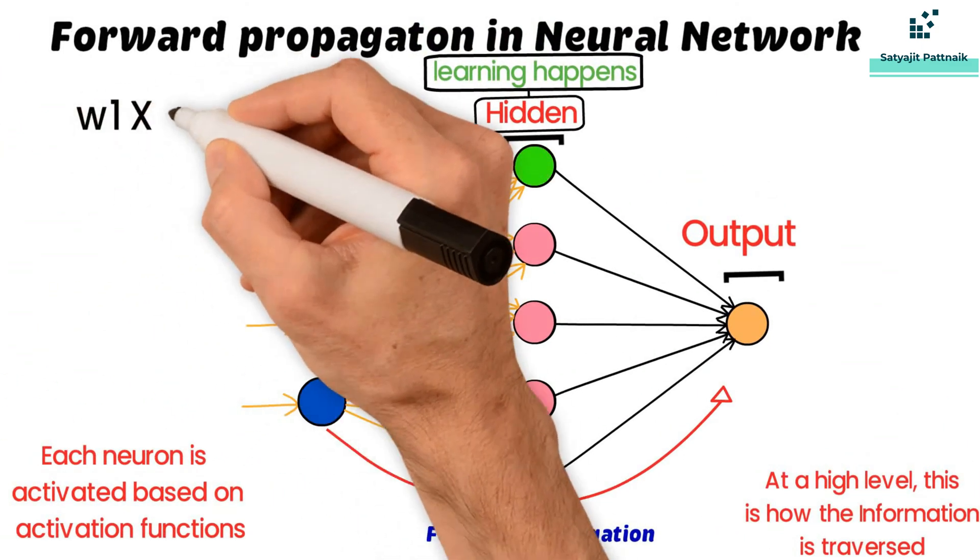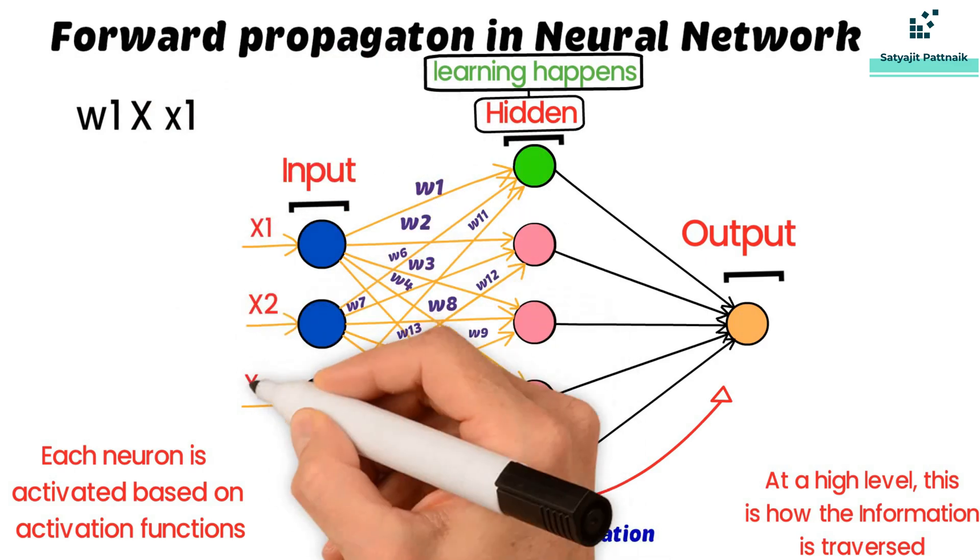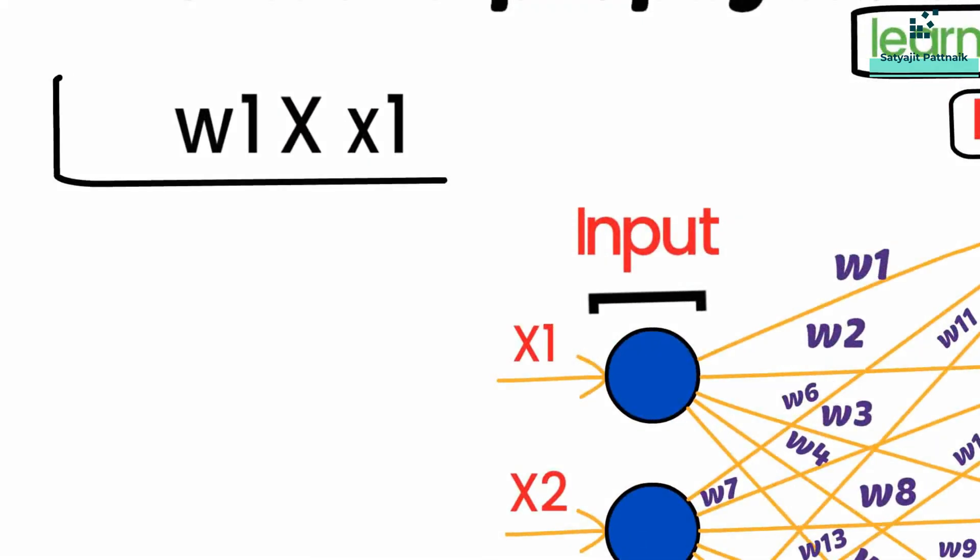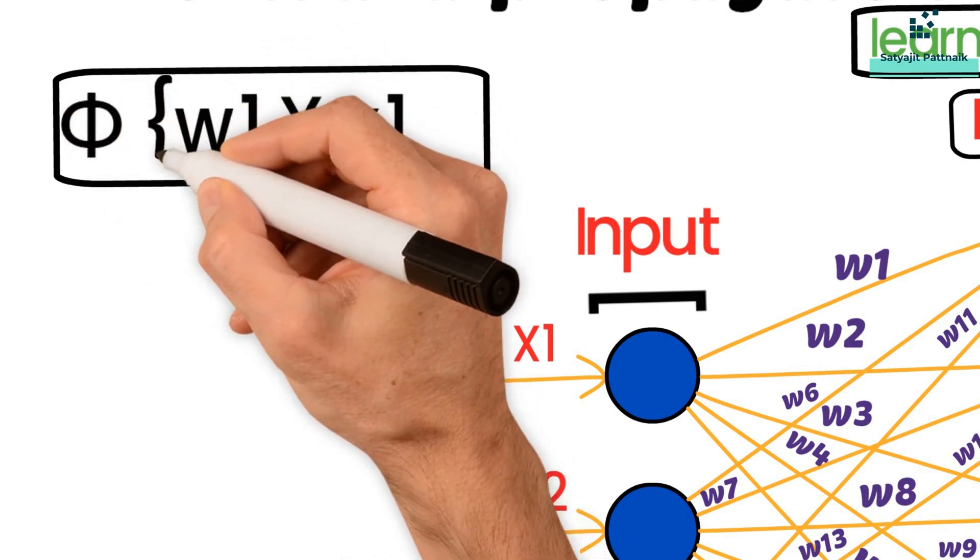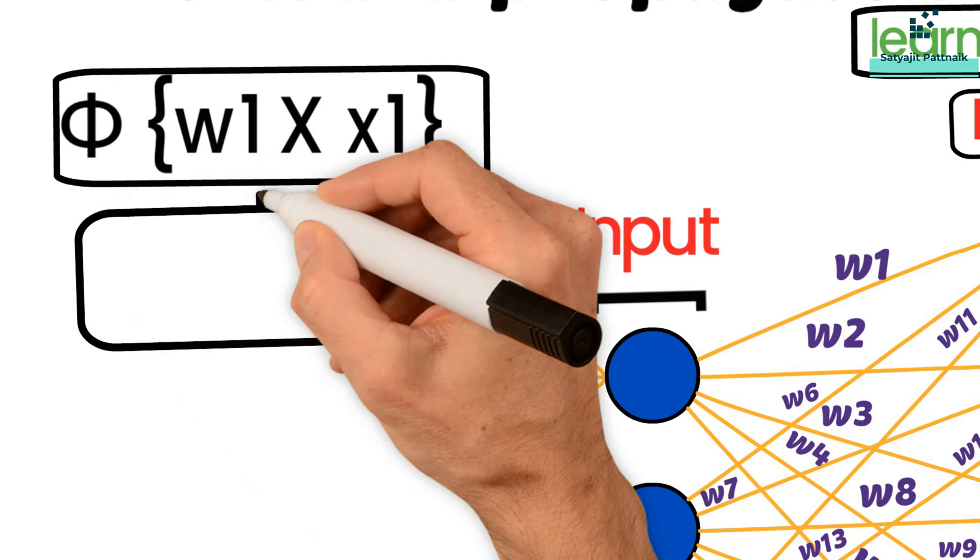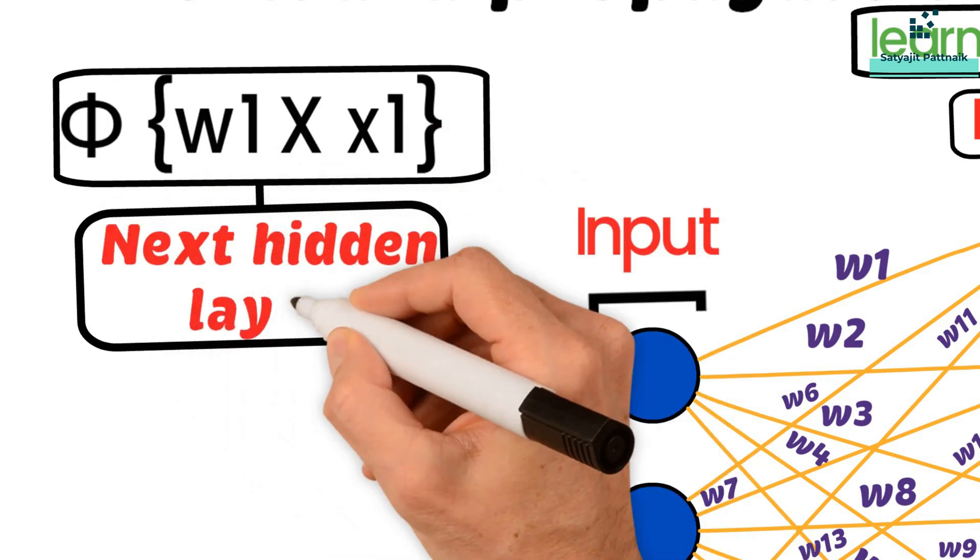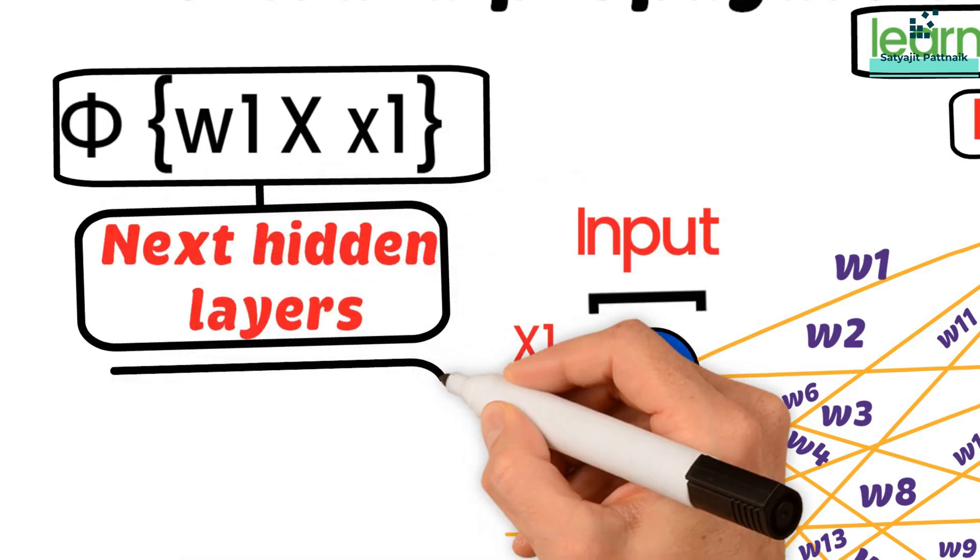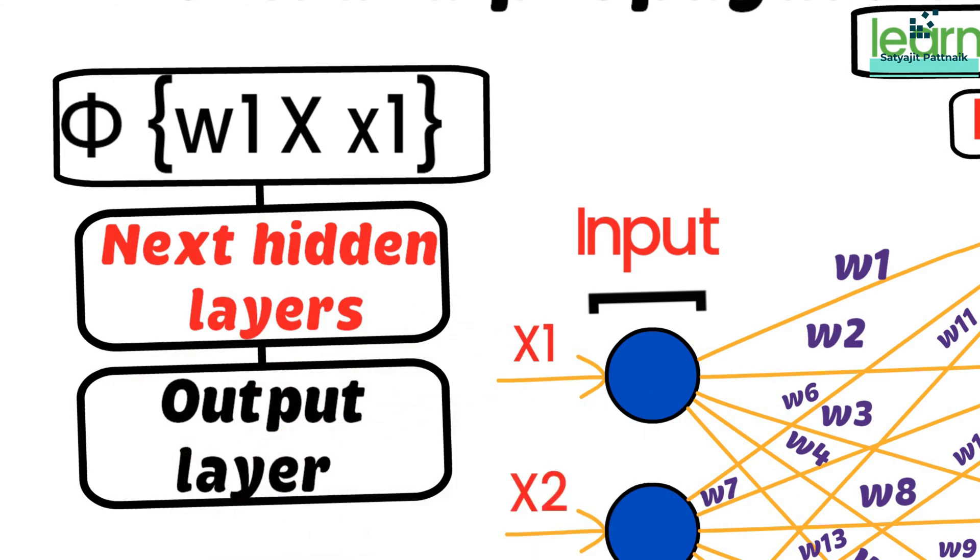Each neuron in the first hidden layer does a dot product of the weight and input they receive. Then this total is fed to an activation function, and the output of which goes to the next hidden layers. This flow repeats until it hits the output layer.